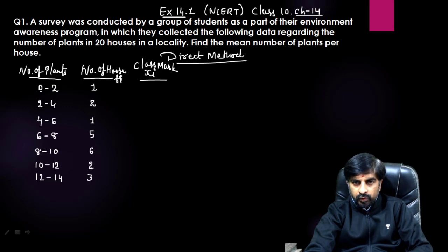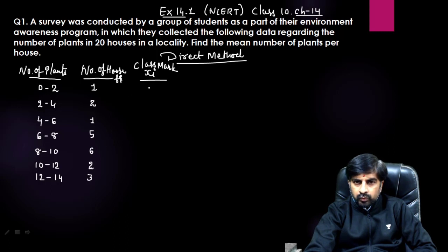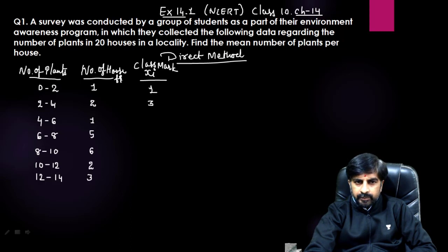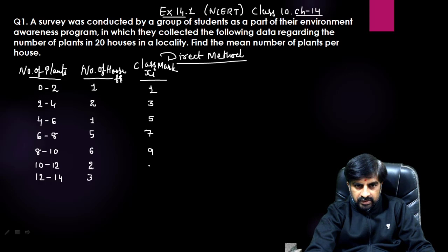To find the midpoint of 0 and 2: add them and divide by 2 — 0 plus 2 divided by 2 gives 1. For 2 to 4, midpoint is 3. For 4 to 6, midpoint is 5. For 6 to 8, midpoint is 7. For 8 to 10, midpoint is 9. For 10 to 12, midpoint is 11. If numbers are very big, just add them and divide by 2 to get the midpoint.